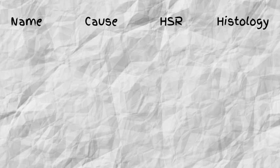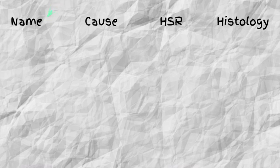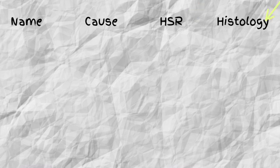To really master this topic, you just have to know four main things: the name or type of transplant rejection, the cause or underlying mechanism behind it, the type of hypersensitivity reaction associated with it, and the histology that can be seen.